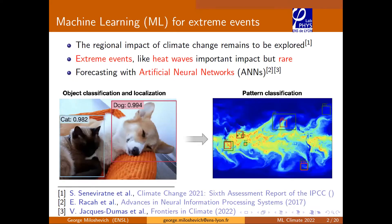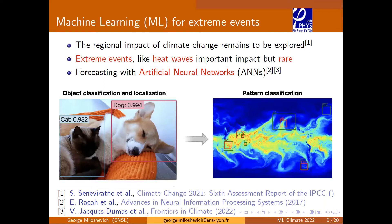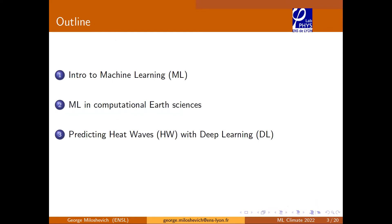Thanks for the introduction. As stated, I'm going to talk about probabilistic forecasting of heat waves with machine learning. Machine learning has been already applied for forecasting heat waves, for example, in this work, but we wanted to make probabilistic forecasting. Here's another example of using methodology developed for object classification and applying it for finding extreme events — in this case, tropical cyclones. I'm going to very quickly jump through the introduction to machine learning, and then how it is used in computational earth sciences.